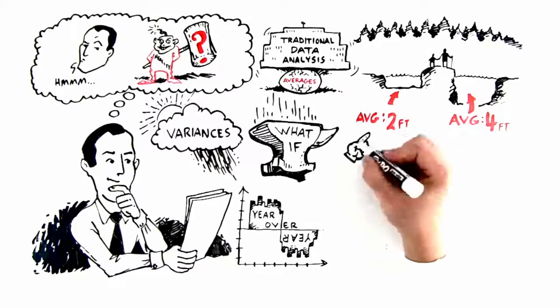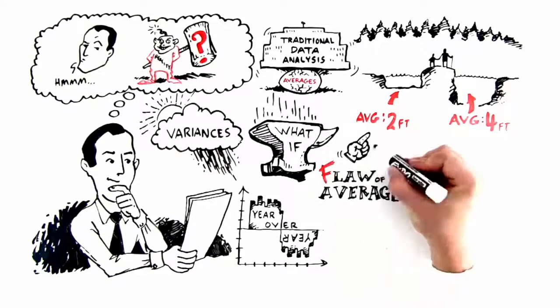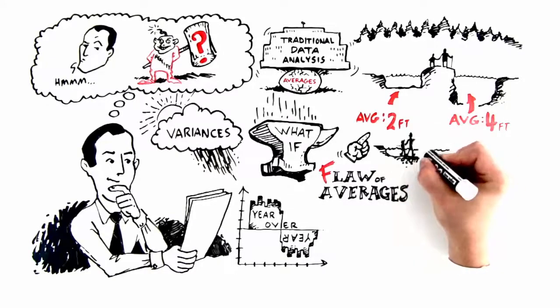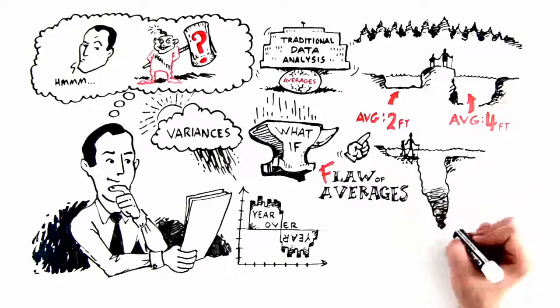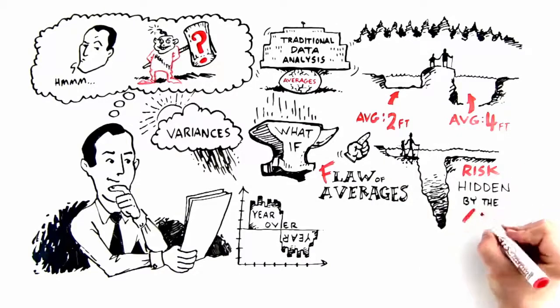Most say the left, and this is the flaw of averages. Regardless of the average, either stream could take a perilous 20-foot drop in the middle, a risk hidden by the number.